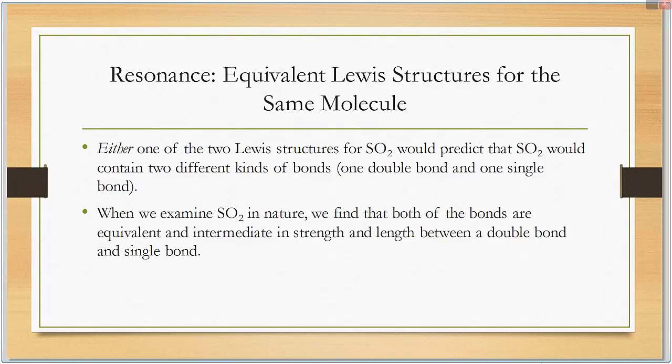Either one of the two Lewis structures for SO2 would predict that SO2 would contain two different kinds of bonds, one double and one single. When we examine SO2 in nature and we do actual experiments with it, we find that both of the bonds are equivalent and intermediate in strength and length of a true double bond.